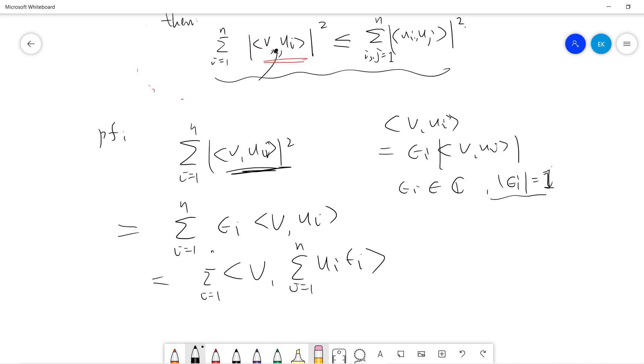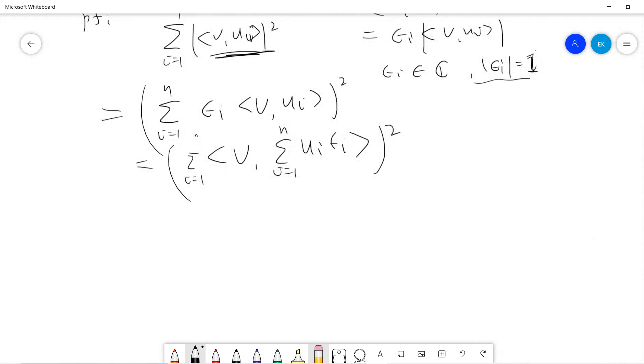But there is a square here. So we need to take a square. So this is the inner product. This is the inner product of V and this combination of U. So this by the Cauchy-Schwarz. Cauchy-Schwarz tells you that if you have two vectors, AB inner product squared, then you will have less than A squared and B squared. So just take the norm.